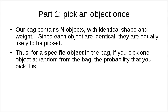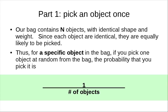Therefore, if we look at one specific object in this bag, and you pick one object from this bag at random, the probability that you are going to pick this specific object is: because they are all equally likely, the probability is one over the number of objects.